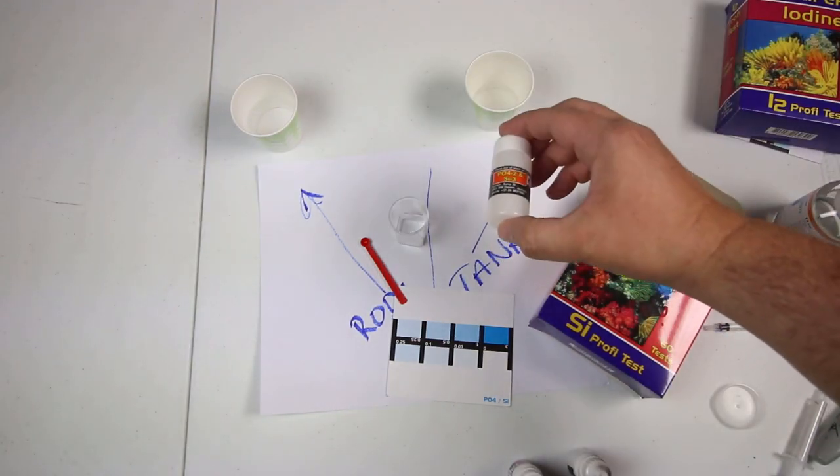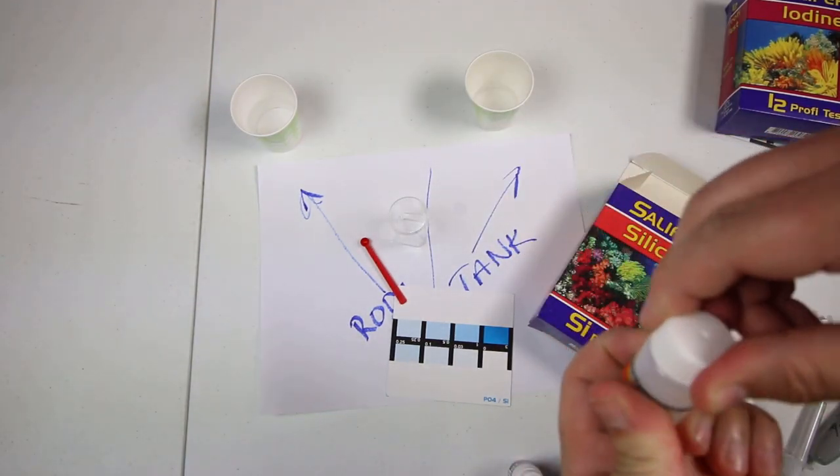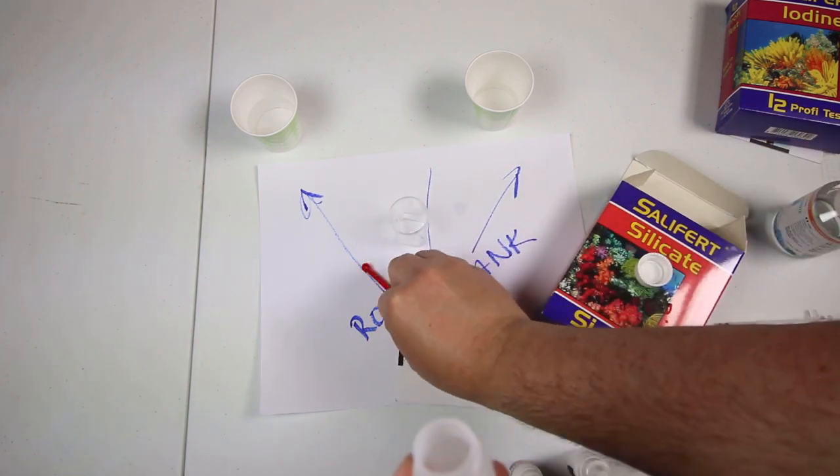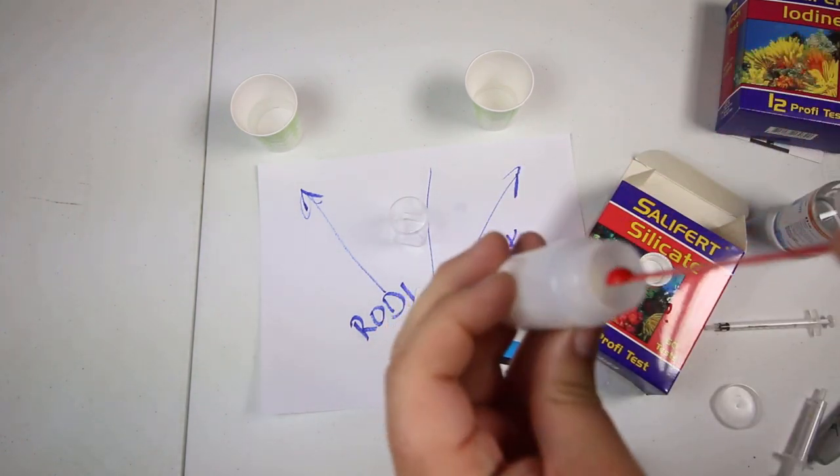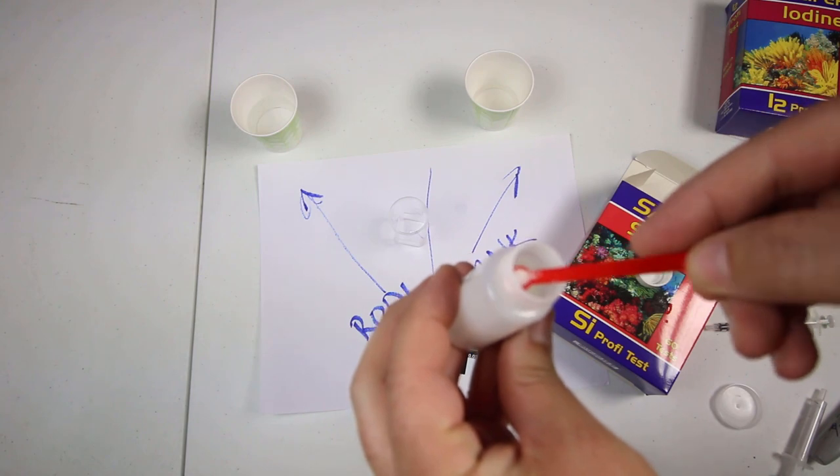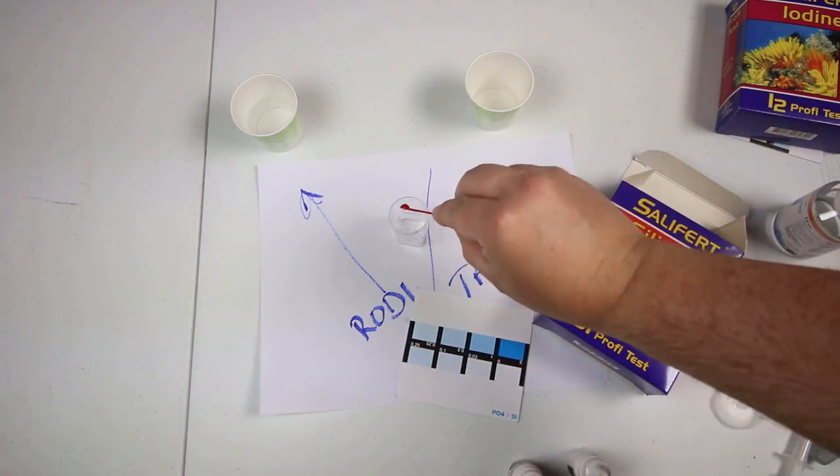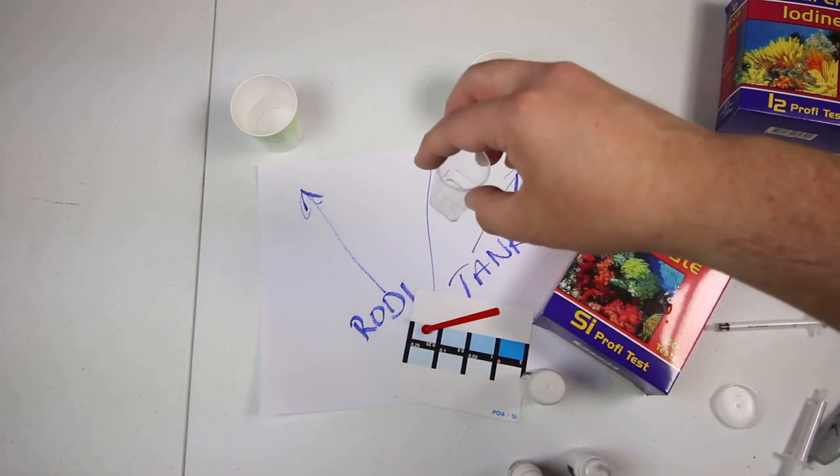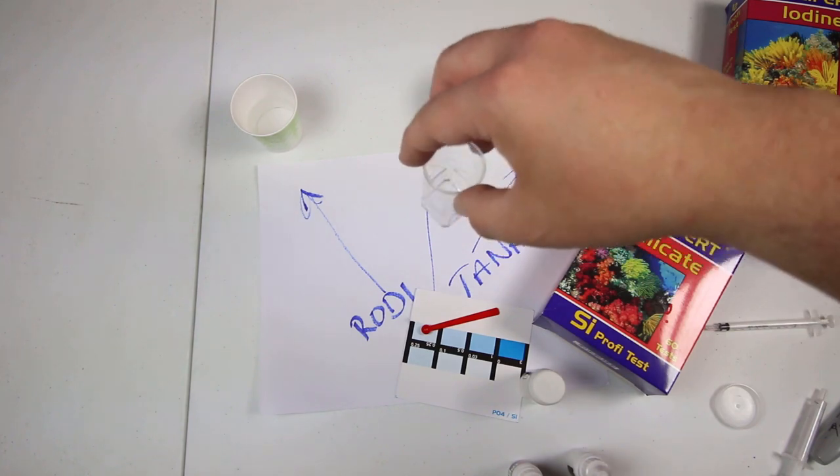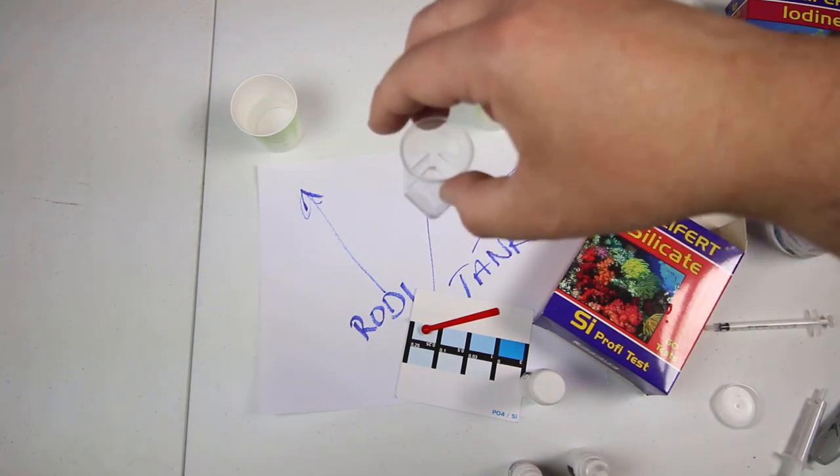And then last but not least we are going to take the SI3 and this time this is a dry powder. We're going to add one level scoop into our mixture and then we're going to swirl this again gently for 20 seconds and our test will be complete.